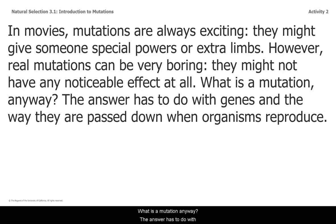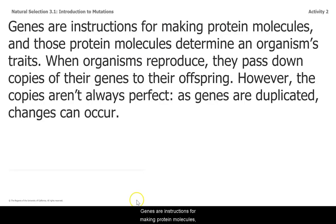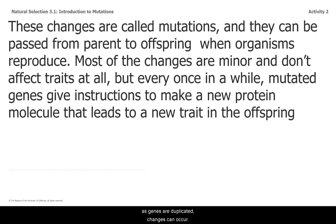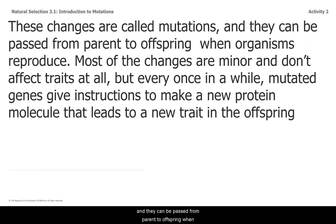What is a mutation anyway? The answer has to do with genes and the way they are passed down when organisms reproduce. Genes are instructions for making protein molecules, and those protein molecules determine an organism's traits. When organisms reproduce, they pass down copies of their genes to their offspring. However, the copies aren't always perfect — as genes are duplicated, changes can occur. These changes are mutations, and they can be passed from parent to offspring.